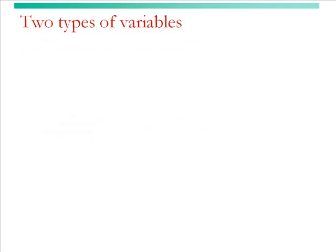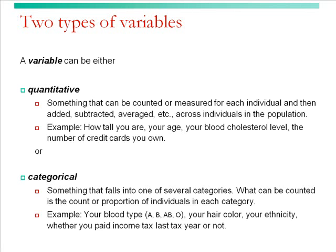Remember that there are two types of variables: quantitative or categorical. The quantitative variable is something that can be measured or counted for each individual, and then you can add, subtract, and average them. Typically there are things that can be measured and have a continuous range of values, such as how tall you are, your age, your blood cholesterol level, your weight—all those are types of quantitative variables.